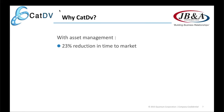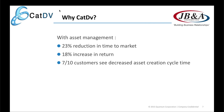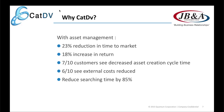With asset management, we get a reduction in time to market, an increase in return — that money spent searching for files comes back because we'll know whether we have them faster. We see a decreased time in the asset creation cycle: how long it takes to communicate to producers, loggers, and team members to say a project is finished. External costs are reduced — tape purchases, upload/download time — and most importantly, reduced searching time through logging, tagging, and utilizing CatDV search tools.